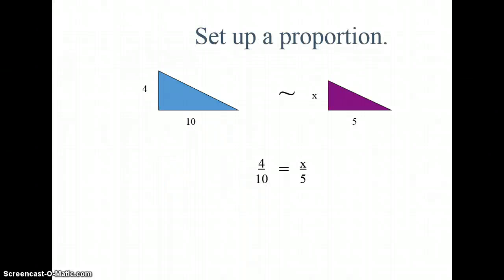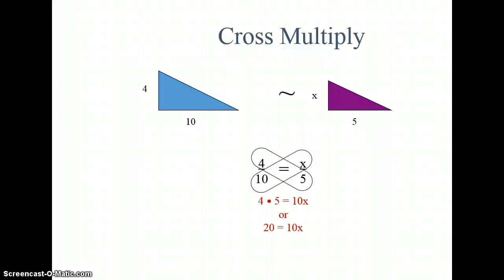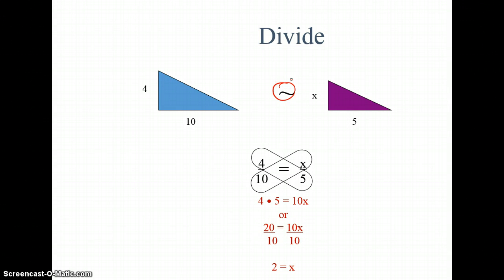Okay. In the proportion we've set up, we've cross-multiplied, and 10 times x is 10x, and we do 4 times 5, which is 20. Then I need to divide by 10 to get x equals 2. So that's the length of the short leg on my second triangle. Since I'm told, and this little symbol means they're similar, since I'm told they're similar, I know x equals 2.